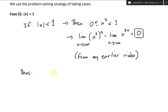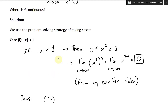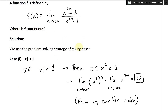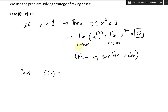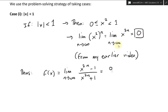So if we put this all together, f of x equals the limit as n approaches infinity of x to the 2n minus 1 over x to the 2n plus 1. The top part goes to zero, so we get 0 minus 1, and the bottom part becomes 0 plus 1, so this equals negative 1. That's the limit when the absolute value of x is less than 1.